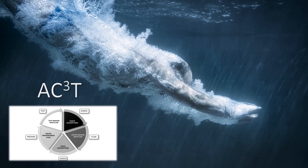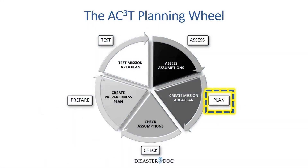And I know you may be thinking: that's great, doc, but how do you actually plan? How does the rubber meet the road? So let's take a deeper dive into that ACT planning wheel. ADEPT uses the ACT planning wheel with five phases: assess, plan, check, prepare, and test. Let's take a closer look at the process of writing an Emergency Operations Plan, or EOP.